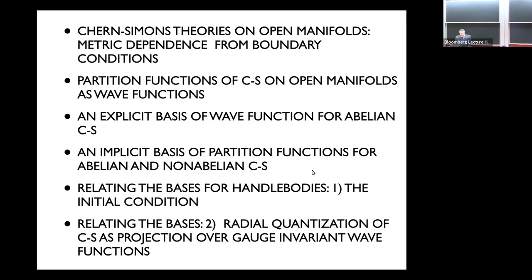What I want to do in this talk is really a change of basis from an implicit basis to a very explicit basis of wave functions, and see which partition function corresponds to which combination of wave functions in the explicit basis. To do that, I will use the method of radial quantization, choosing a foliation of the handlebody which becomes singular at some point, giving data at that point such that the whole partition function is not singular there, and then evolving in radial time until we hit the boundary.